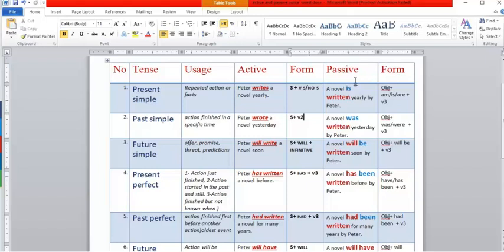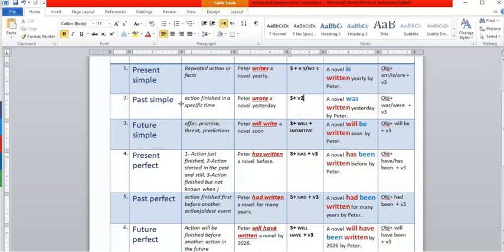If it is passive voice, how do I make it? Two things you depend on: use verb to be and verb 3. You start with the object, then am/is/are plus verb 3: 'A novel is written yearly by Peter.' Number two: past simple, action finished in a specific time in the past. 'Peter wrote a novel yesterday.' Here we have subject plus verb 2. How to make it passive? Start with object, then was or were and verb 3: 'A novel was written yesterday by Peter.'